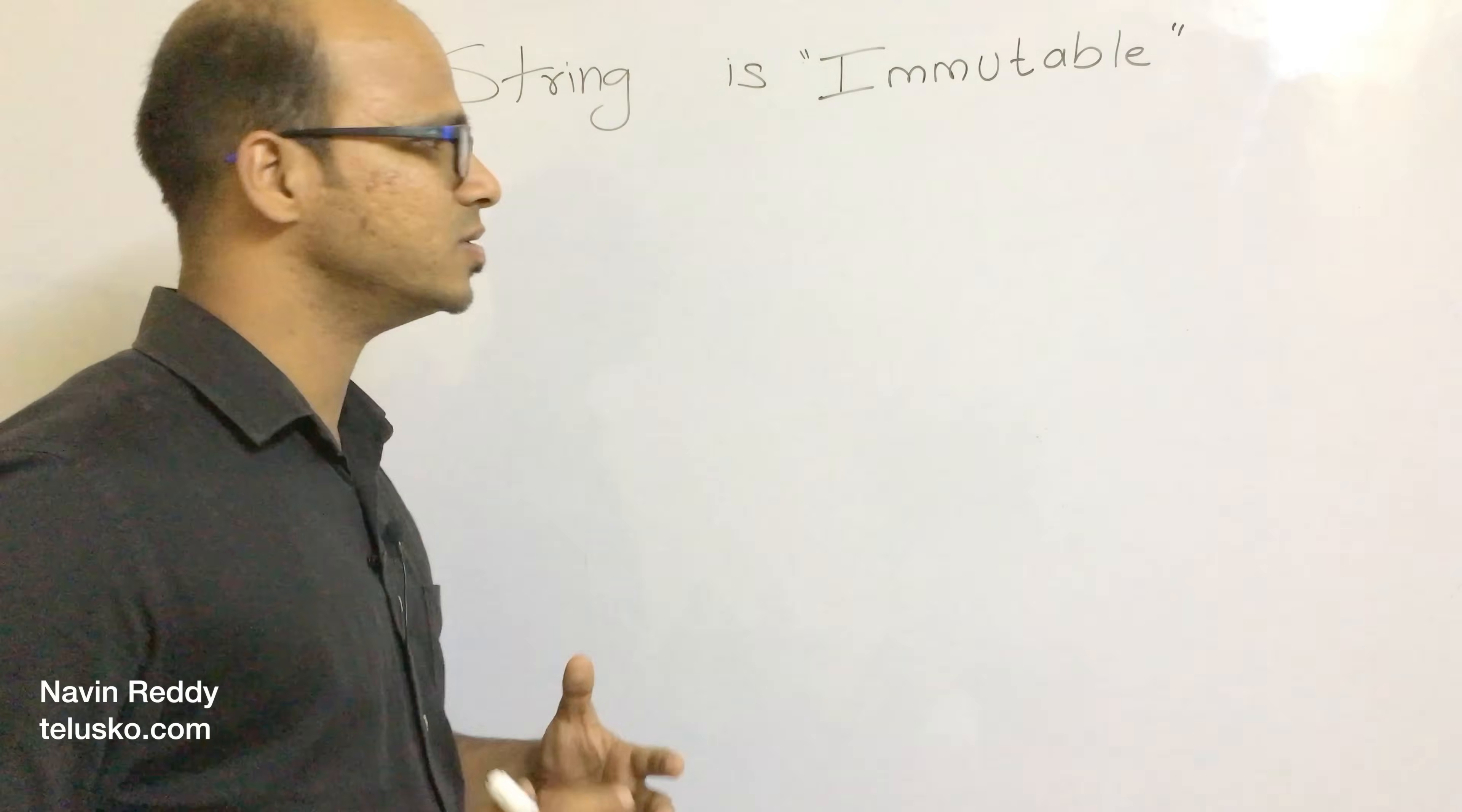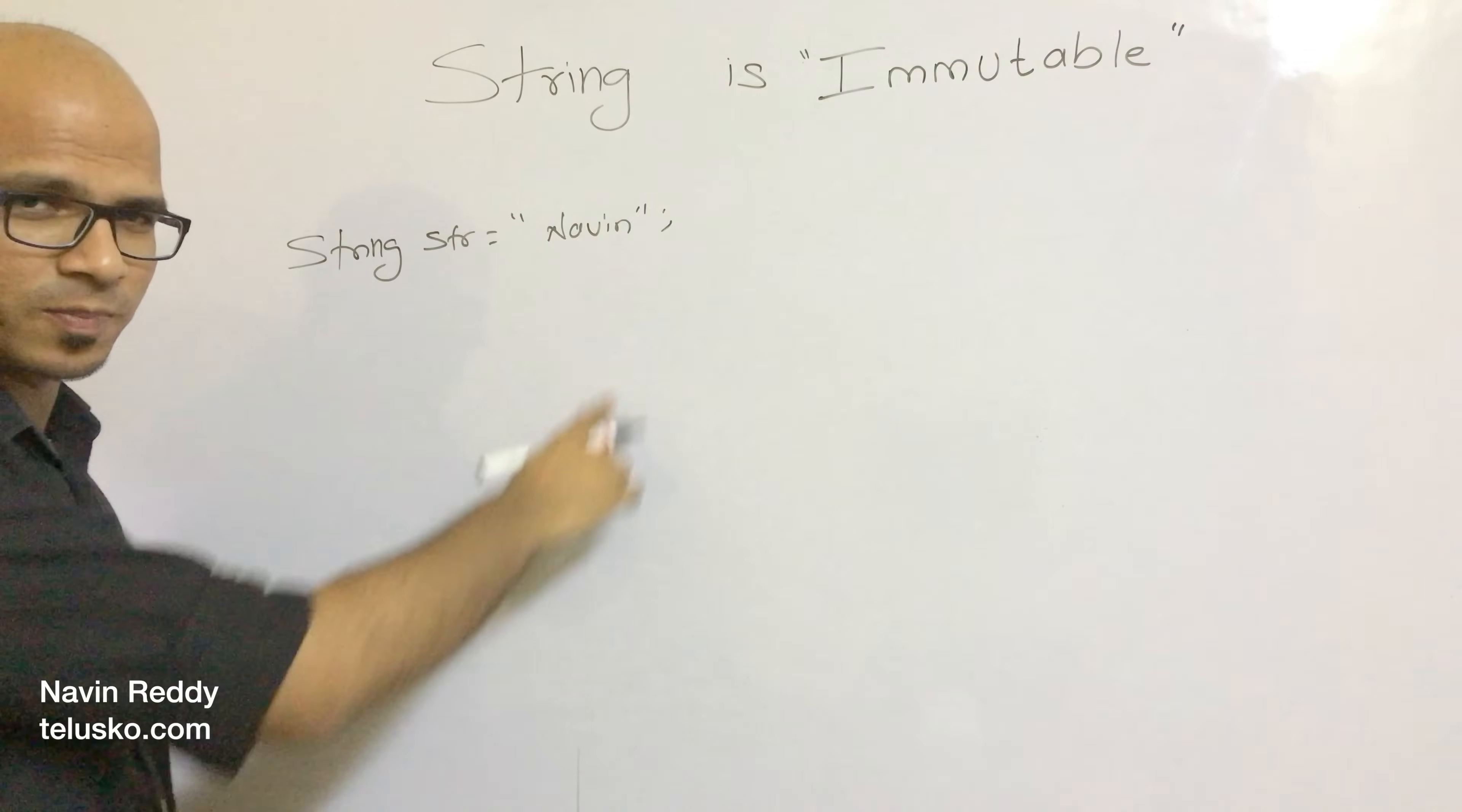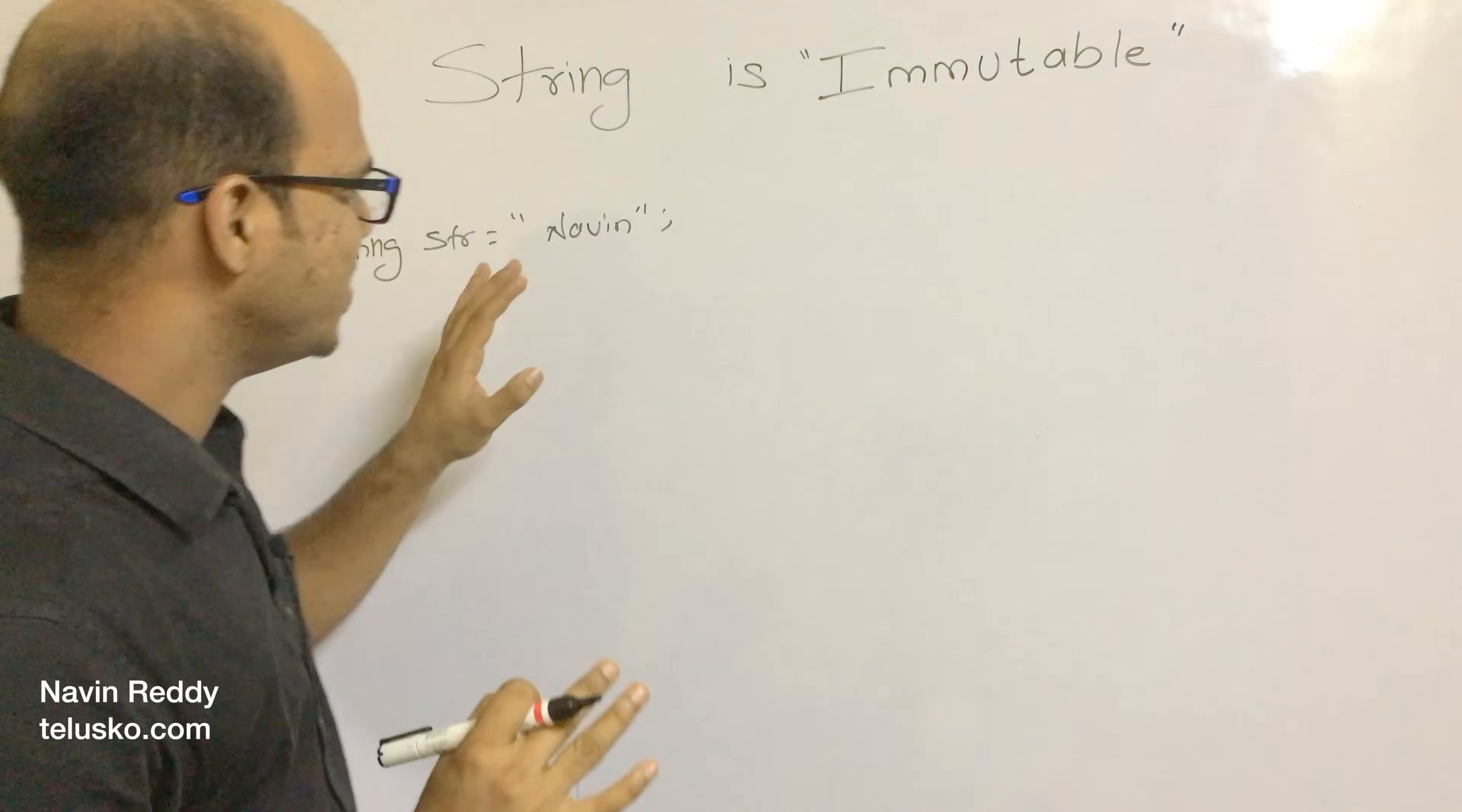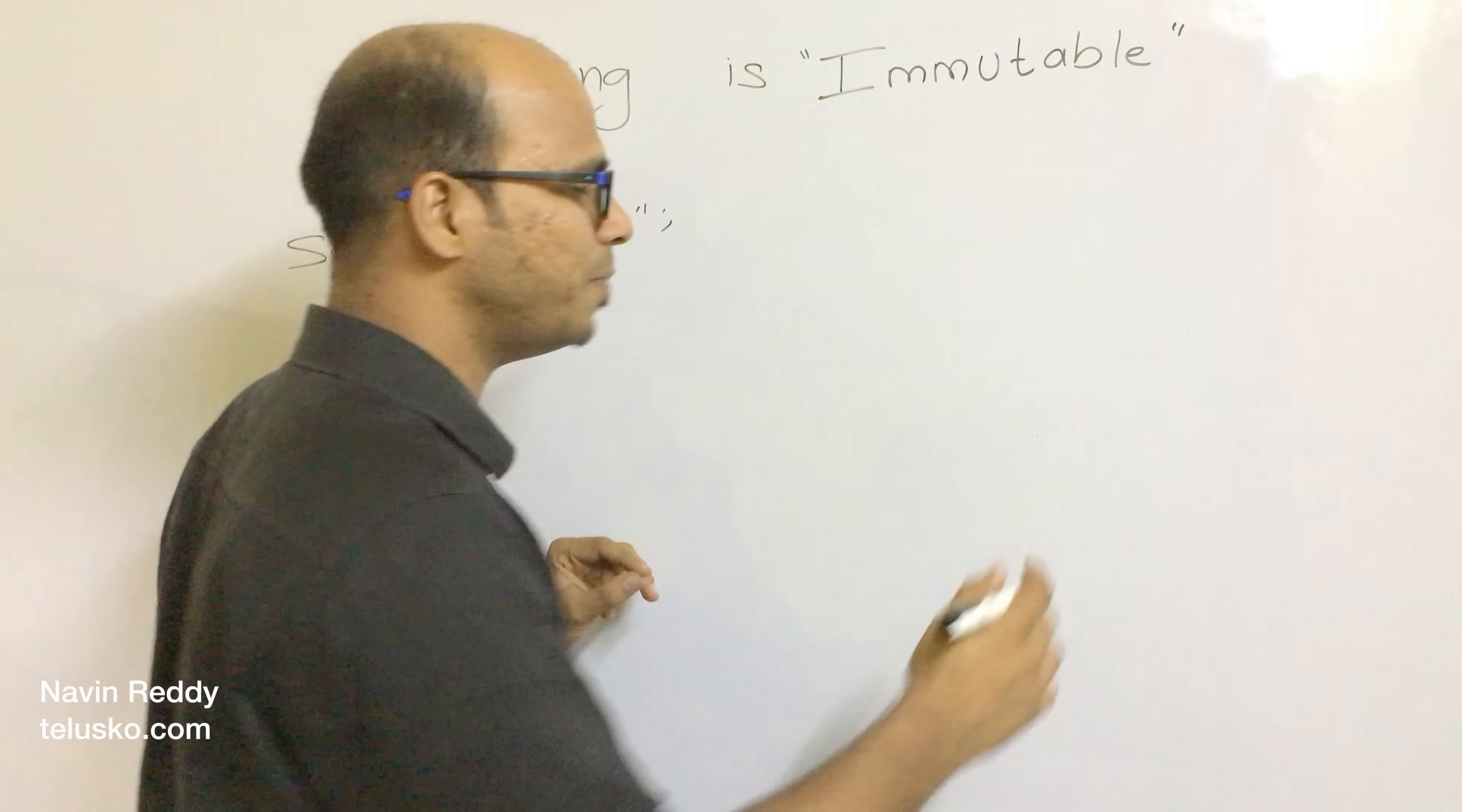Now let's see how to do that. Normally we write this statement: string STR equals, let's say, my name which is Naveen. Make sure it is N-A-V-I-N, not N-A-V-E-E-N. People normally search me with double E. So string STR equals Naveen, that's a string.